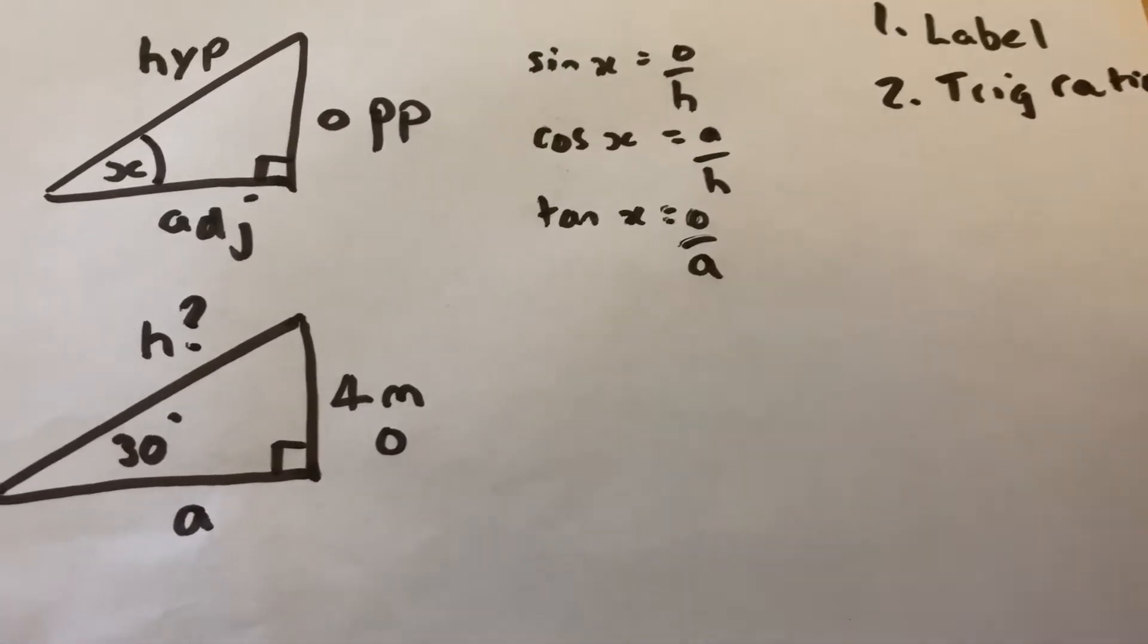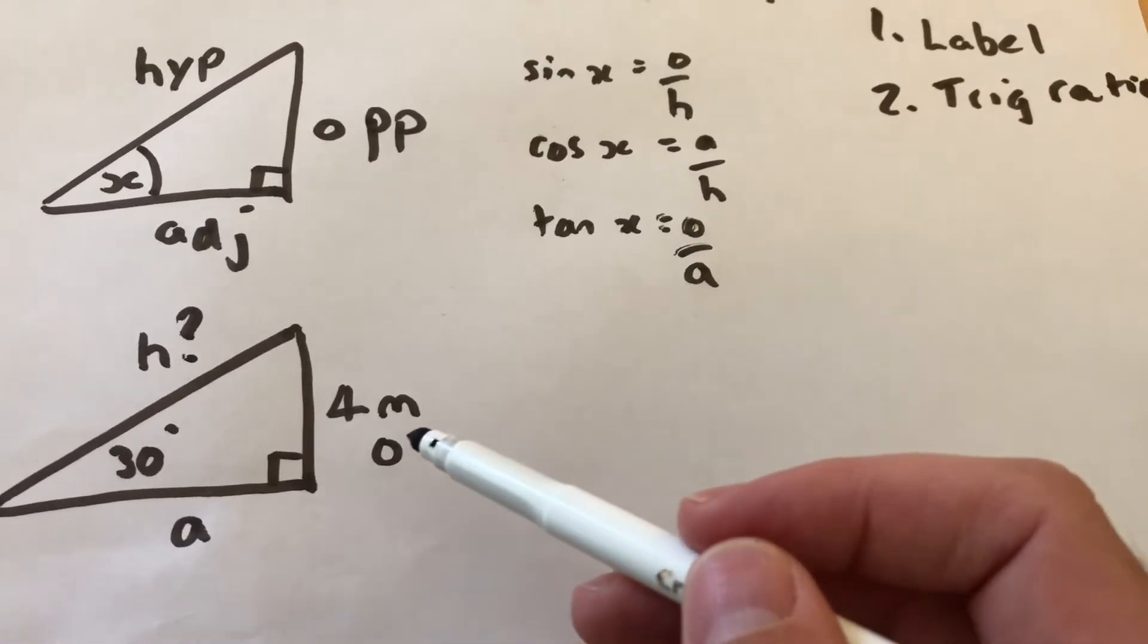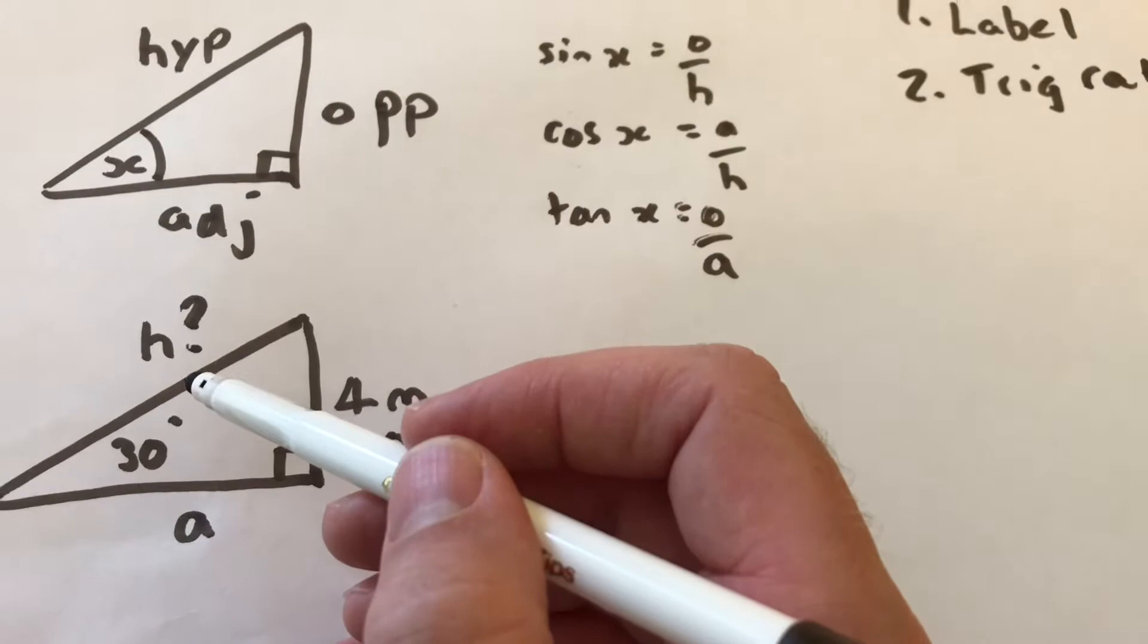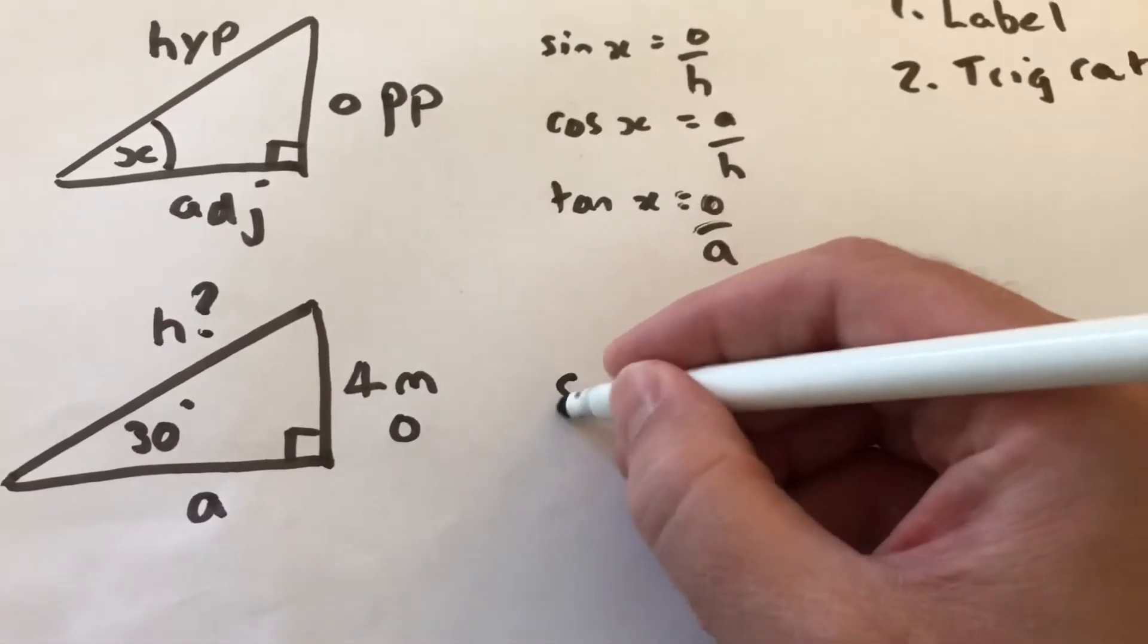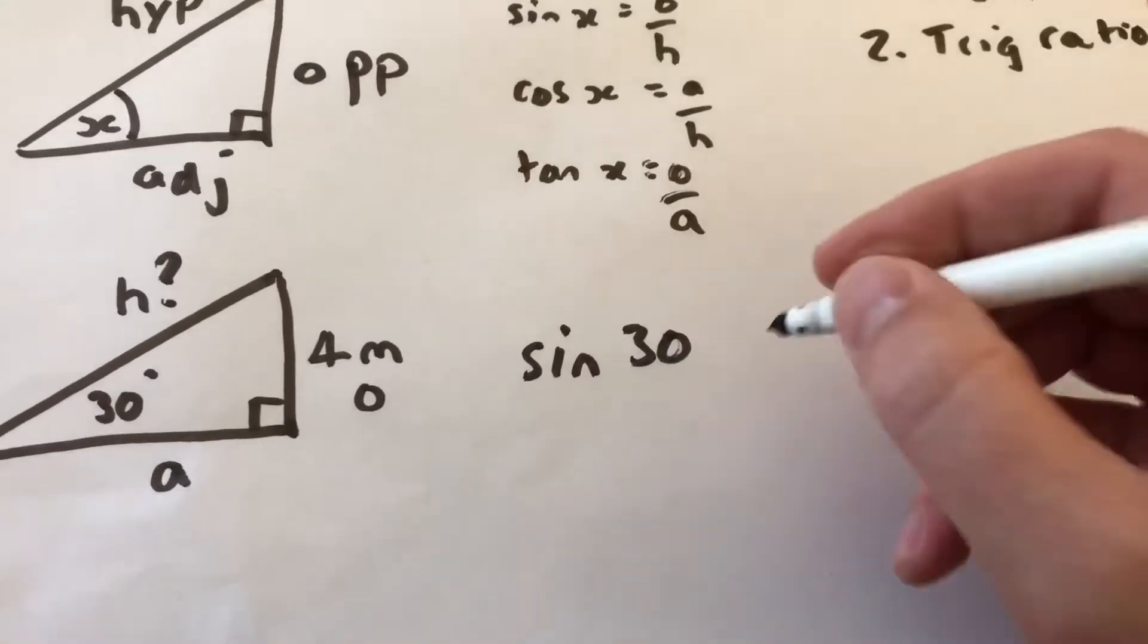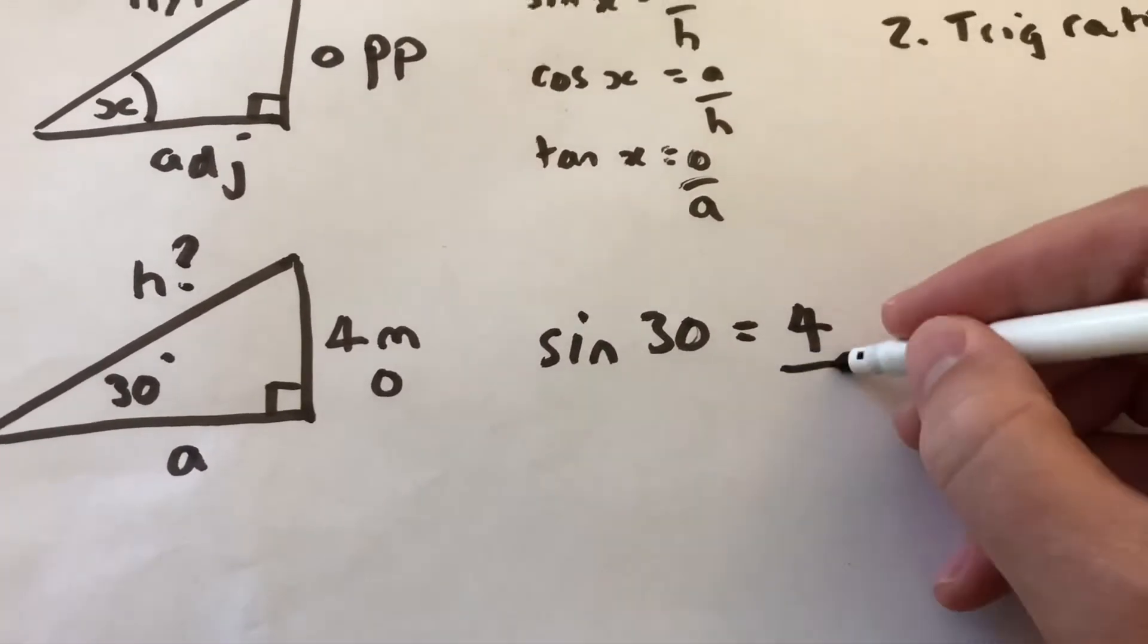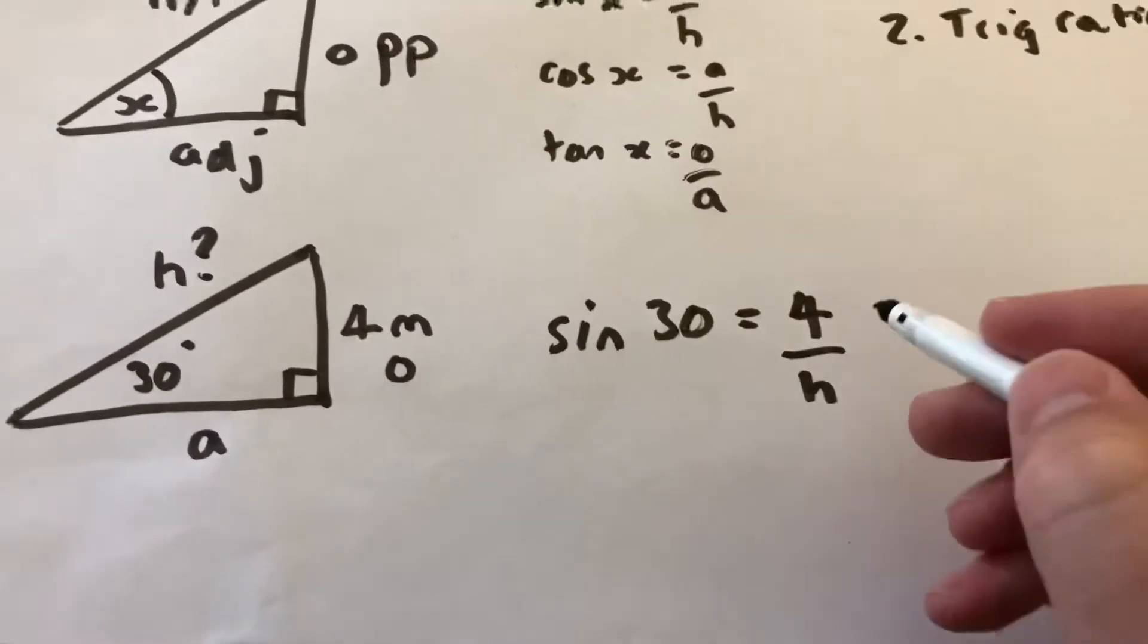First we label it, then we find the trig ratio. So we've got the opposite and we want the hypotenuse. Opposite and hypotenuse, so we want sine. So sine of 30 is 4 over hypotenuse. Now it's an equation.